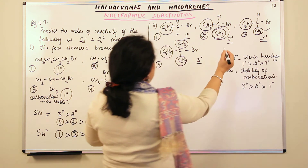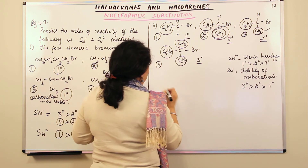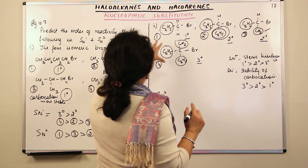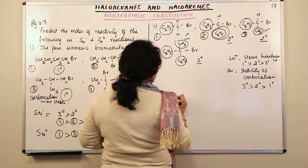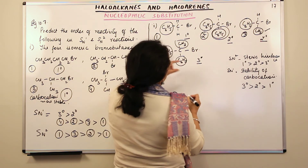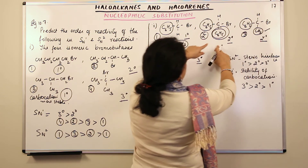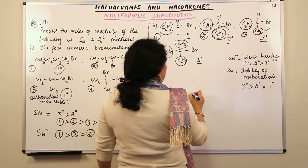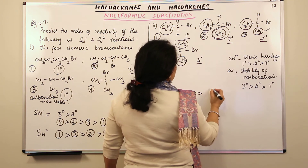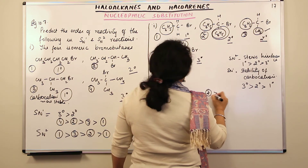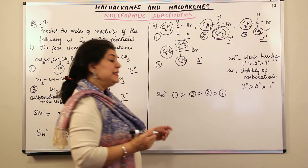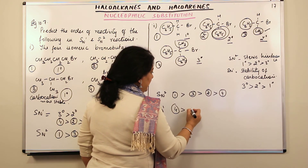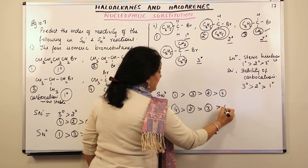Greater steric hindrance means a lesser chance of following the SN2 mechanism. For SN2, compound 1 (primary) would be most reactive, then compound 3, then compound 2, and least reactive would be compound 4. For SN1, the sequence would be the opposite: compound 4 would be most reactive, then 2, then 3, and then 1.